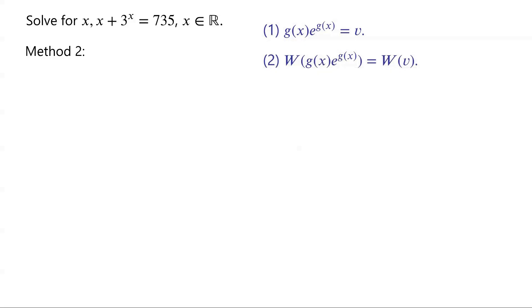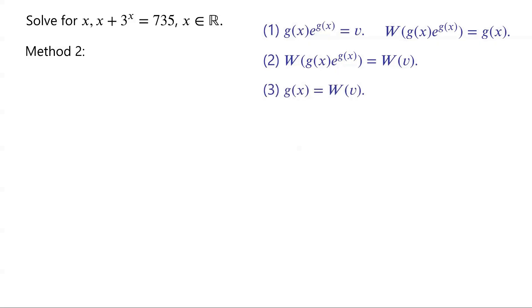By definition, W of g(x) times e to the power of g(x) equals g(x). The final step is to solve for x in the equation g of x equals W of v. To transform the equation into this form, we rearrange the equation.